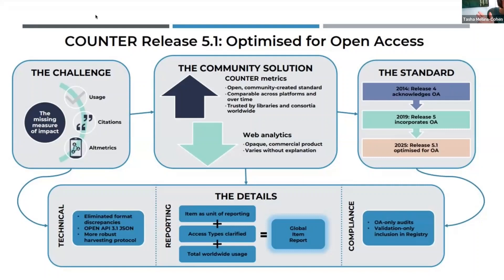Taken together, those three things allow us to really put the focus on the global item report — worldwide usage on an item-by-item level across the board. Finally, we've really looked into our compliance because we know that audits were difficult for open access only publishers. We have developed ways to deliver OA-only audits and allow those who cannot afford a full audit process inclusion in the Counter registry by providing proof that you can pass the validation tool. So that is technical compliance only. I think I'm on time and I'm going to hand over to the next speaker.